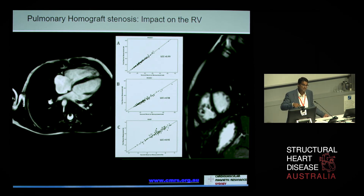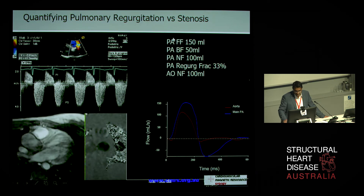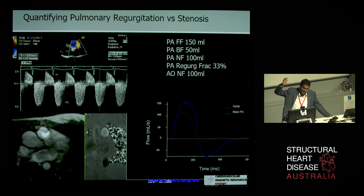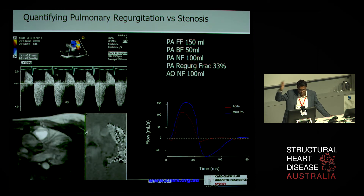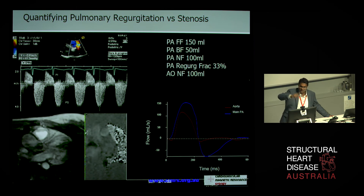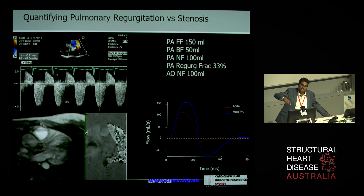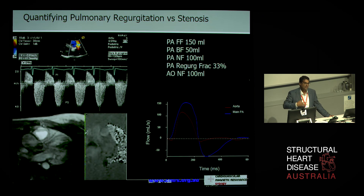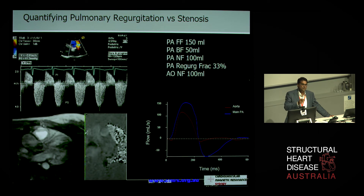Our reproducibility data for right ventricular volumes, published from following patients for more than 10 years with MRI, is very robust. On the echo still, you'll see significant flow acceleration, significant pulmonary stenosis, and also significant pulmonary regurgitation. On the phase contrast data, the aortic flow is fairly standard at about 100 mils, but with the pulmonary artery we have a big sweep of 150 mils in systole and then 50 mils coming back as backflow in diastole. The pulmonary regurgitant fraction is 33% — moderate-plus pulmonary regurgitation — combined with pulmonary stenosis.